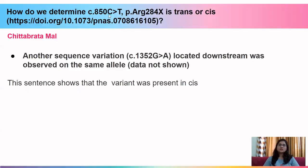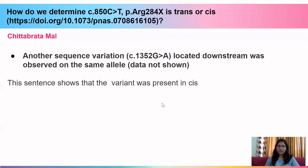Chitavrita asks how to determine if a variant is cis or trans. I read the article mentioned and found this sentence: 'Another sequence variation located downstream was observed on the same allele, data not shown.' Since it is present on the same allele, you annotate the variant as cis. If it were on a different allele, it would be trans. Sometimes a chromatogram or sequencing data in the paper can show cis or trans; other times the text format provides this information explicitly.